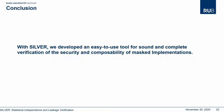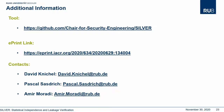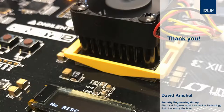To conclude, with SILVER we developed an easy-to-use tool for sound and complete verification of the security and composability of masked implementations in both software and hardware. Here is some additional information about SILVER. You can find the tool on GitHub following this link — please feel free to download it and try it out. Feedback is always welcome. You can also find the ePrint link to the paper and our contacts: my email address, the email address of Pascal, and also the email address of Amir are listed here. Please feel free to contact us if you have any questions or problems when running SILVER. Thank you very much for your attention and for watching this video.